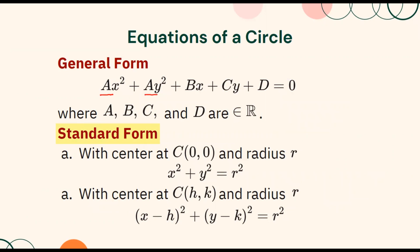Moreover, the standard form of the equation of a circle is x squared plus y squared equals r squared when the center of the circle is at the origin, or at (0, 0). On the other hand, if the center of the circle is not at the origin, then the standard form of the circle is x minus h quantity squared plus y minus k quantity squared equals r squared, wherein h and k represent the coordinates of the center.